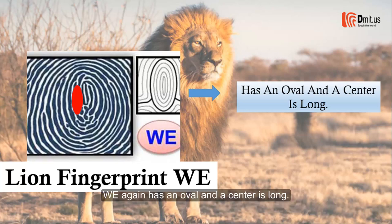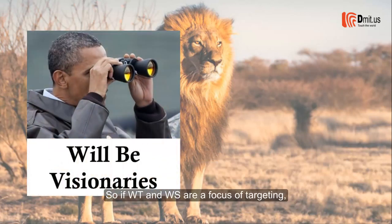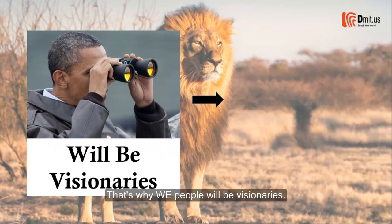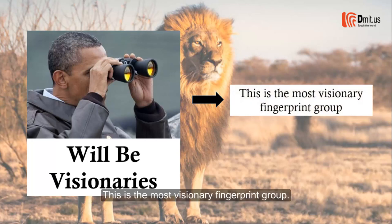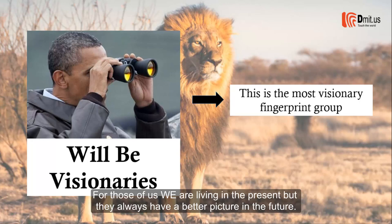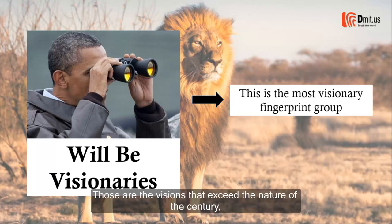WE also has an oval, and its center is longer. So if WT and WS are a focus of targeting, WE is a longer target. That's why WE people will be visionaries — this is the most visionary fingerprint group. Those with WE are living in the present but always have a better picture of the future, five years from now exceeding the nature of their time.